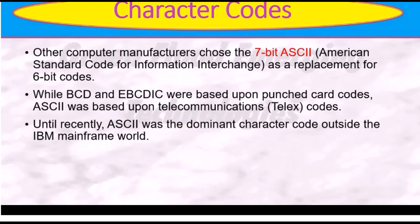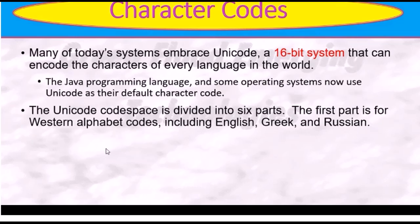Other computer manufacturers chose 7 bits, giving us ASCII — the American Standard Code for Information Interchange — as a replacement for 6-bit encoding. The BCD and EBCDIC were based upon punched cards, whereas ASCII was based upon telecommunications teletype systems. And eventually ASCII became a dominant character encoding standard outside the IBM mainframe world.